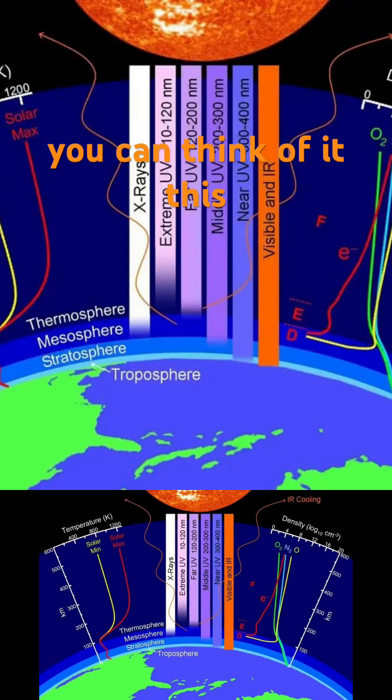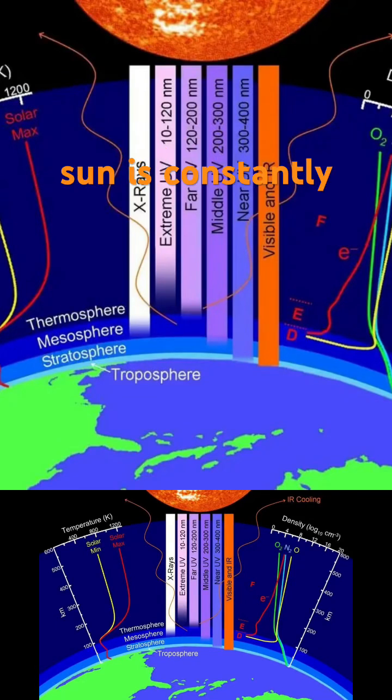For a quick synopsis, you can think of it this way. The sun is constantly emitting radiation. That radiation then affects the earth's ionosphere.